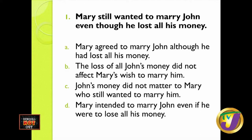Test question one: John doesn't have any money, but Mary has not changed her mind about wanting to marry him. Is it A — Mary agreed to marry John, although he had lost all his money — or B — the loss of all John's money did not affect Mary's wish to marry him — or C — John's money did not matter to Mary, who still wanted to marry him — or D — Mary intended to marry John, even if he were to lose all his money?